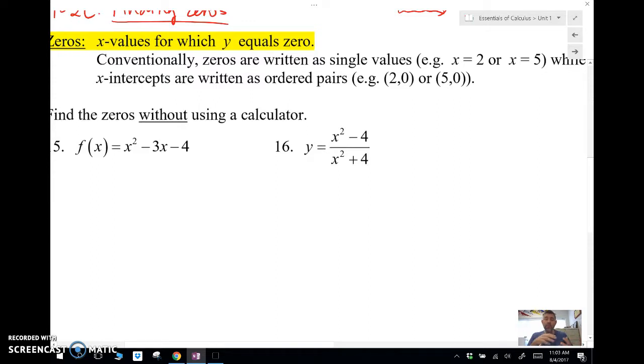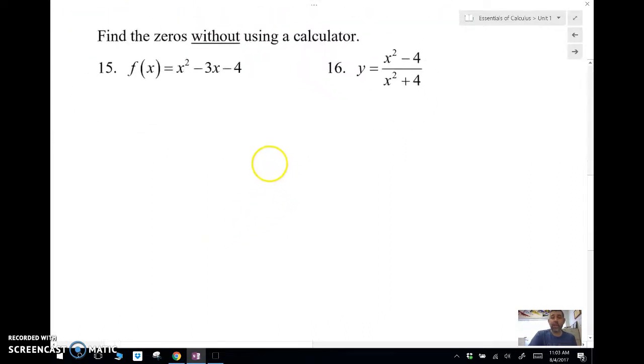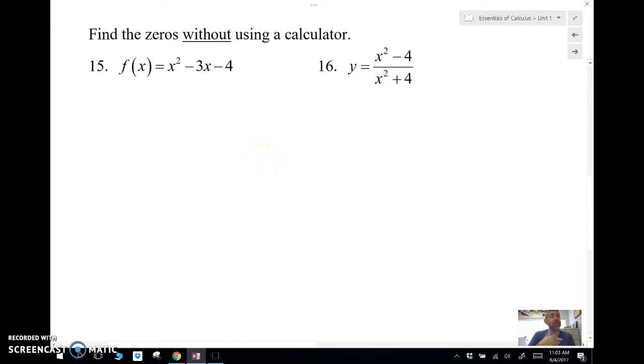When we're using the calculator to find zeros, it's going to give us the x-intercepts. But if it's asking for the zero, we're actually going to just write it as x equals. Let's take a look at a couple of examples here without using a calculator, finding the zeros.